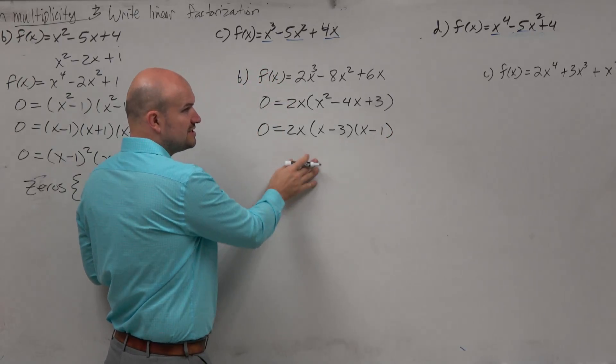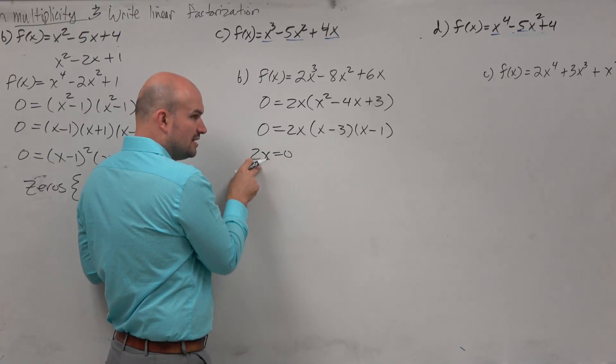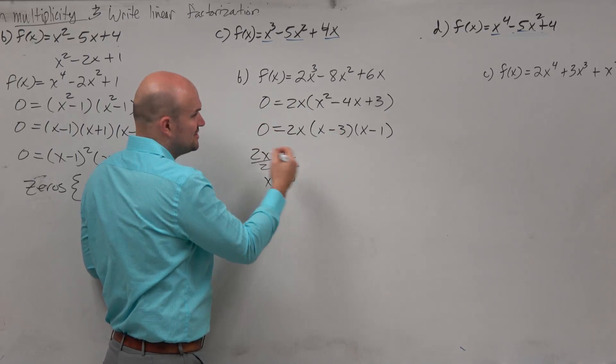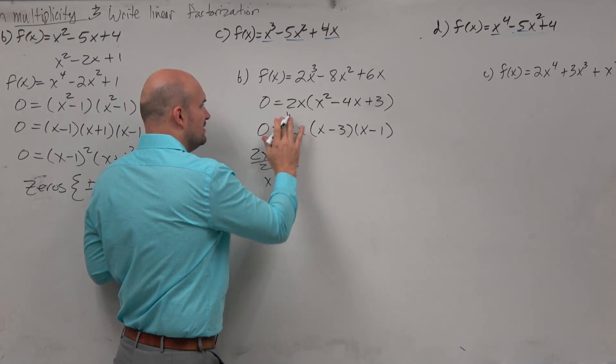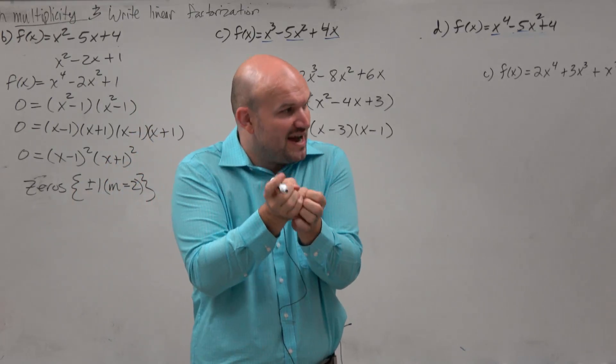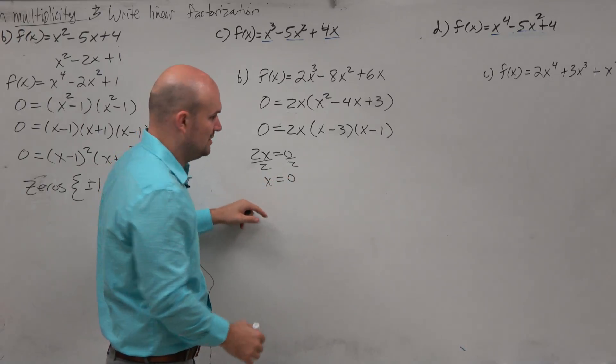And then when you use the zero product property, just remember, when you set these equal to 0, like 2 just divides out. Right? 2 does not affect the zero. 2 could be 1 half, it could be 2 over pi. Like, it doesn't matter what that factor is, it's just a factor of the zero. It gets divided out. So don't include 2 as a zero.